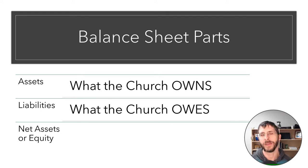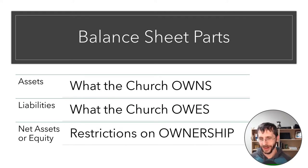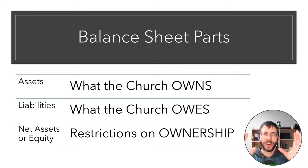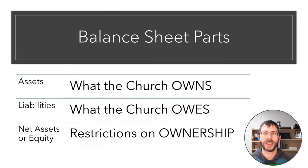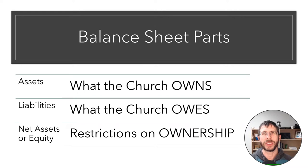And the last thing is equity or net assets. This is kind of a confusing section, but I think about it like this: it's restrictions on ownership. It's looking at your assets minus your liabilities. What part of this is unrestricted so that the church could use it any way it wants? What part of this is restricted by donors? What part of this is maybe restricted by the board? That's what your equity section could tell you — the restriction on what we call the net assets.